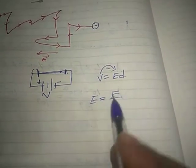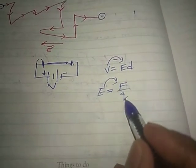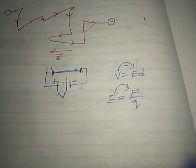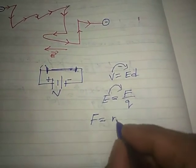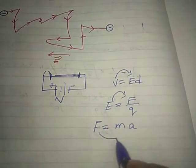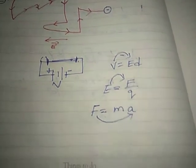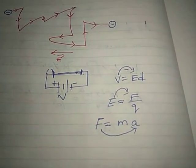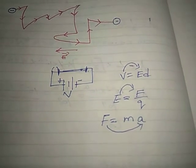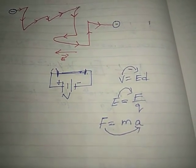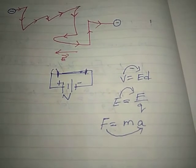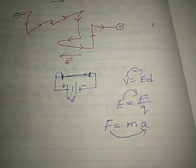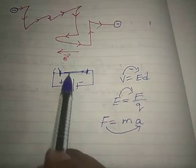In the electric field, a force is created on the unit positive charge. Here the charge is electrons. The force is strongly created on the electrons, and due to this force the electrons experience acceleration.